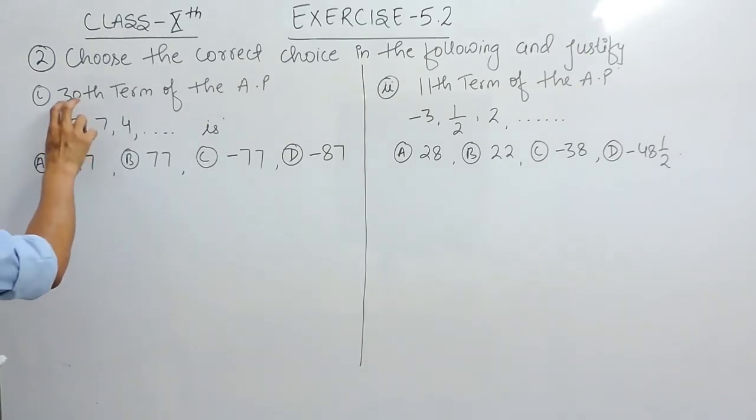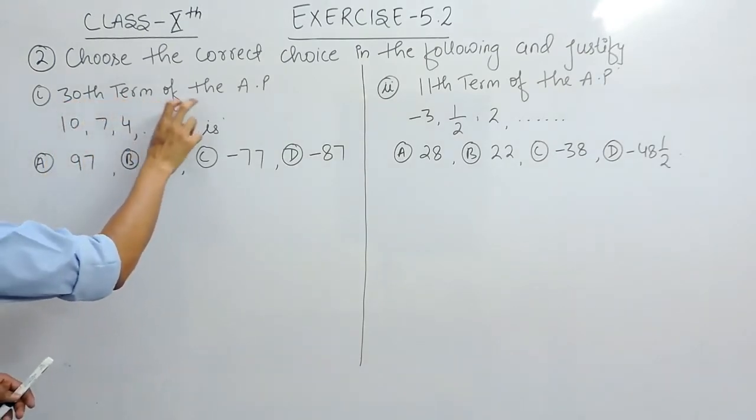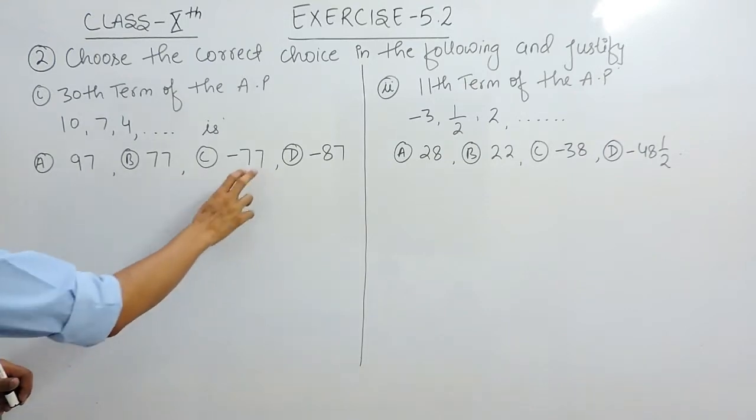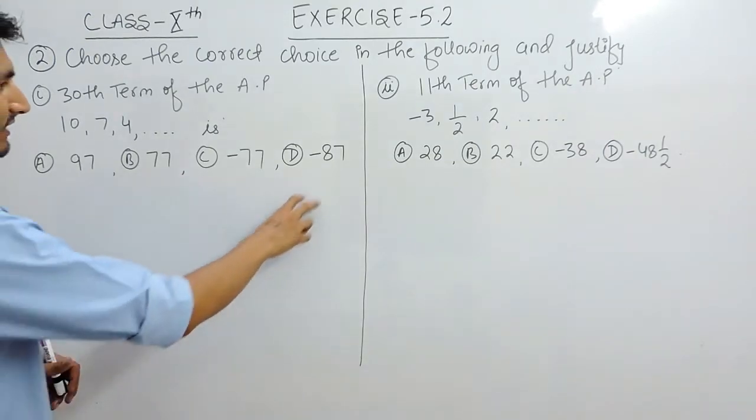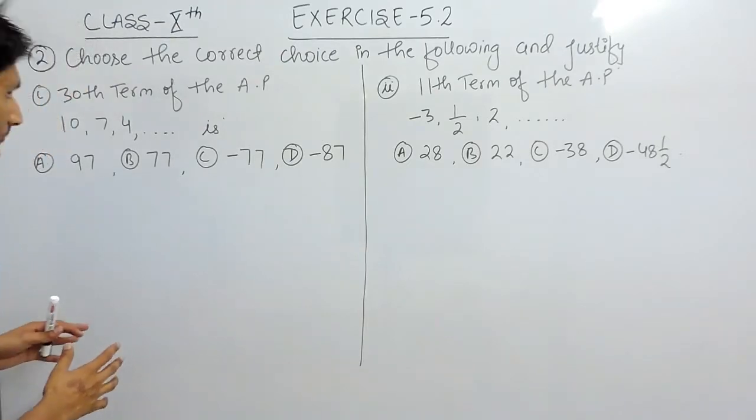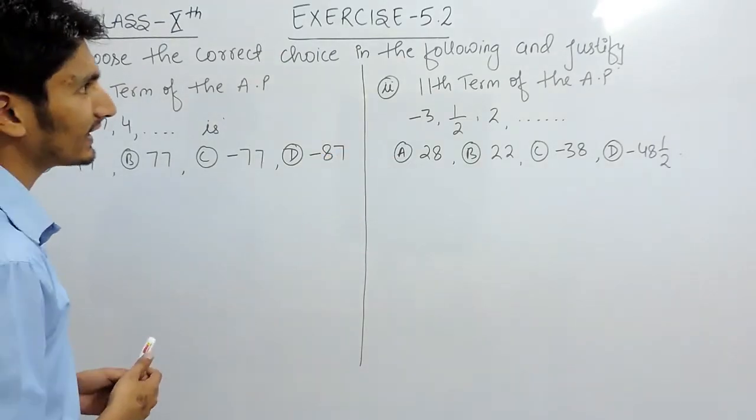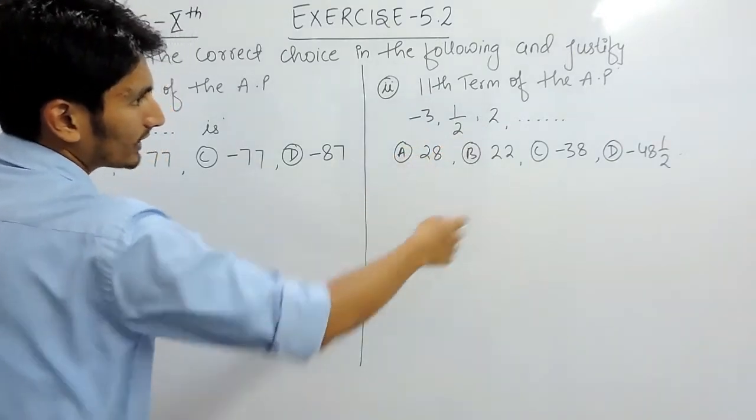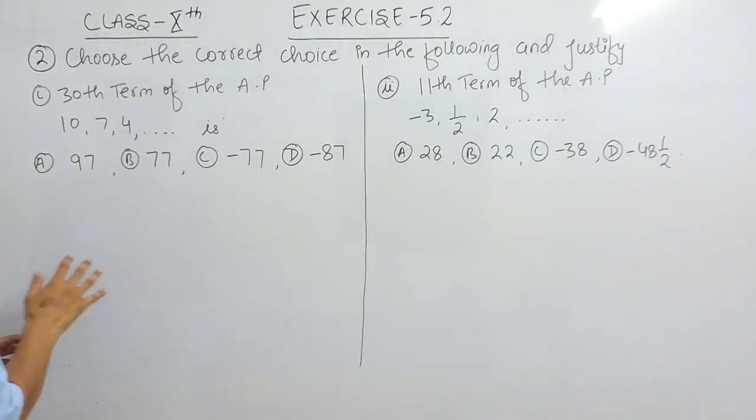In the first part, you have to find the 30th term of the AP 10, 7, 4, ... with options: A) 97, B) 77, C) -77, and D) -87. Similarly, in the second case, you have to find the 11th term of this AP where you are given four options.